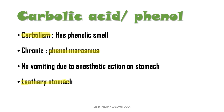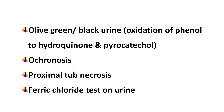Next, ochronosis: phenol is converted into hydroquinone and pyrocatechol in the body before being excreted in the urine. These cause pigmentation over the cornea and various cartilages — that is called ochronosis. Ochronosis is commonly associated with alkaptonuria. The urine will be olive-green or black in color. It causes proximal tubular necrosis, and the test to detect it is the ferric chloride test on urine.